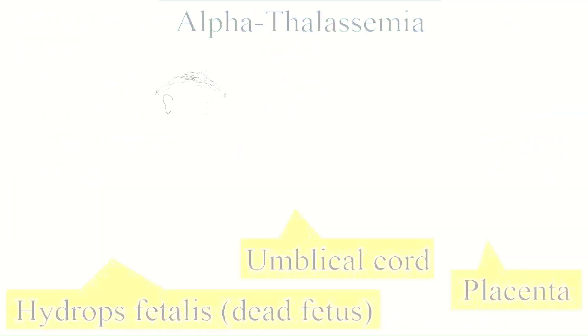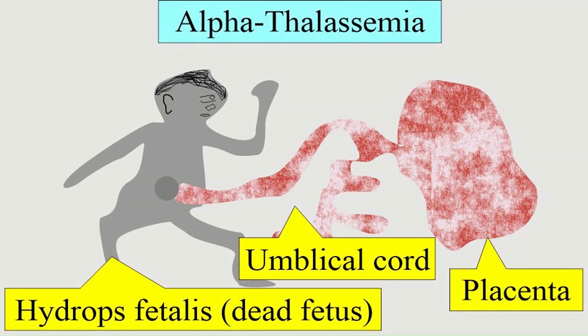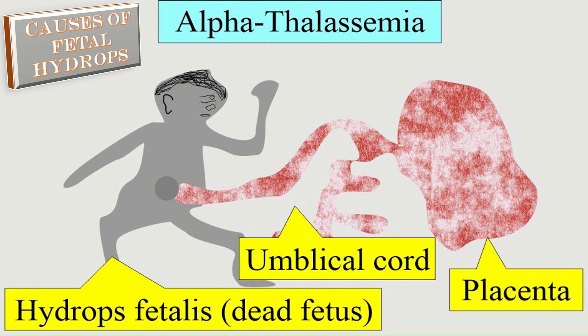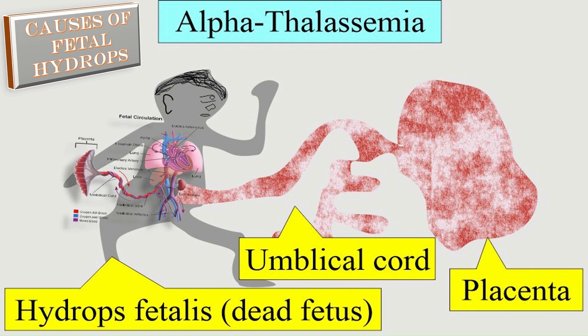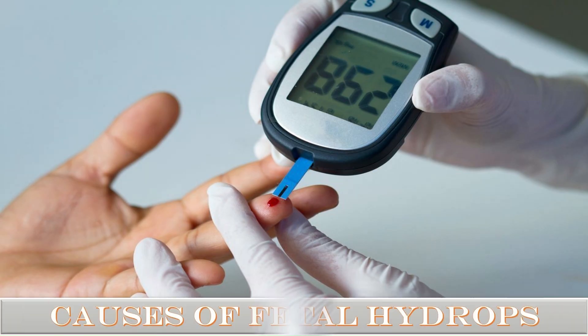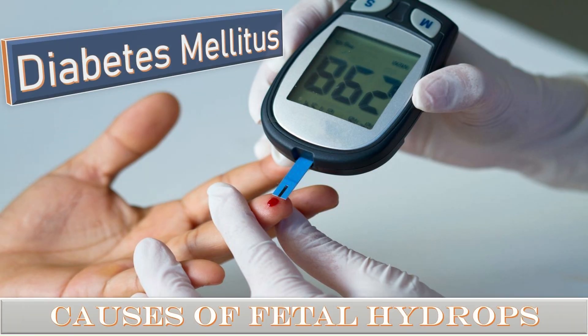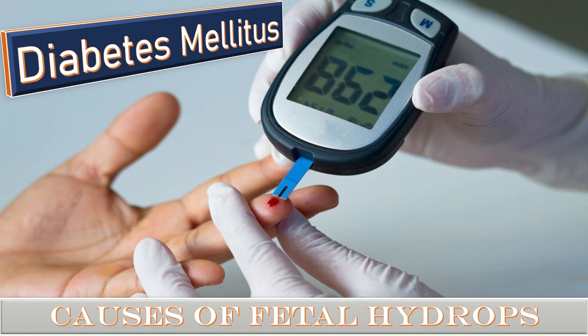Hydrops can also occur in cases of alpha thalassemia. If the developing baby's organs cannot overcome anemia, the heart starts to fail. Due to compensatory mechanisms, a large amount of fluid builds up in the baby's tissue and organs, resulting in hydrops fetalis. Diabetes mellitus in the mother is also a medical cause of fetal hydrops.